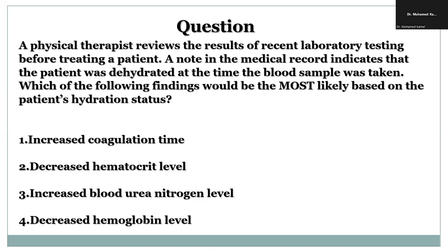So here we have a dehydrated patient and we are reviewing the laboratory work. We have four things to look at: coagulation time, represented by prothrombin time (PT) and partial thromboplastin time (PTT); hematocrit level, which is the red blood cell mass after taking fluids; blood urea nitrogen level, which is an indication of kidney function; and hemoglobin level, which is connected with hematocrit. Which one would we expect to be increased?